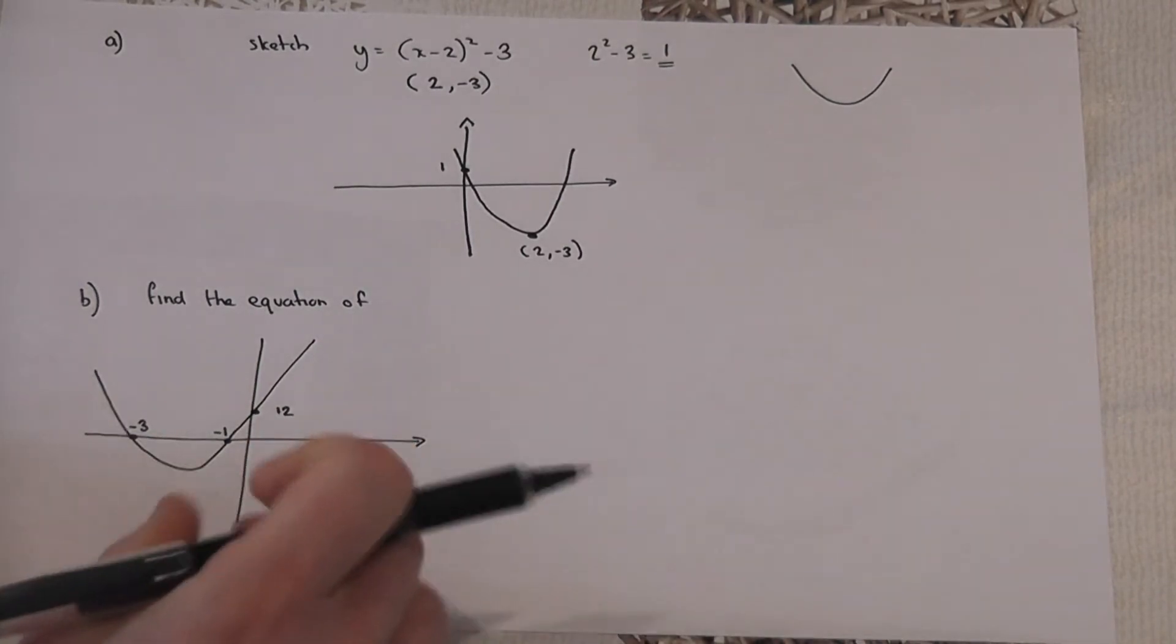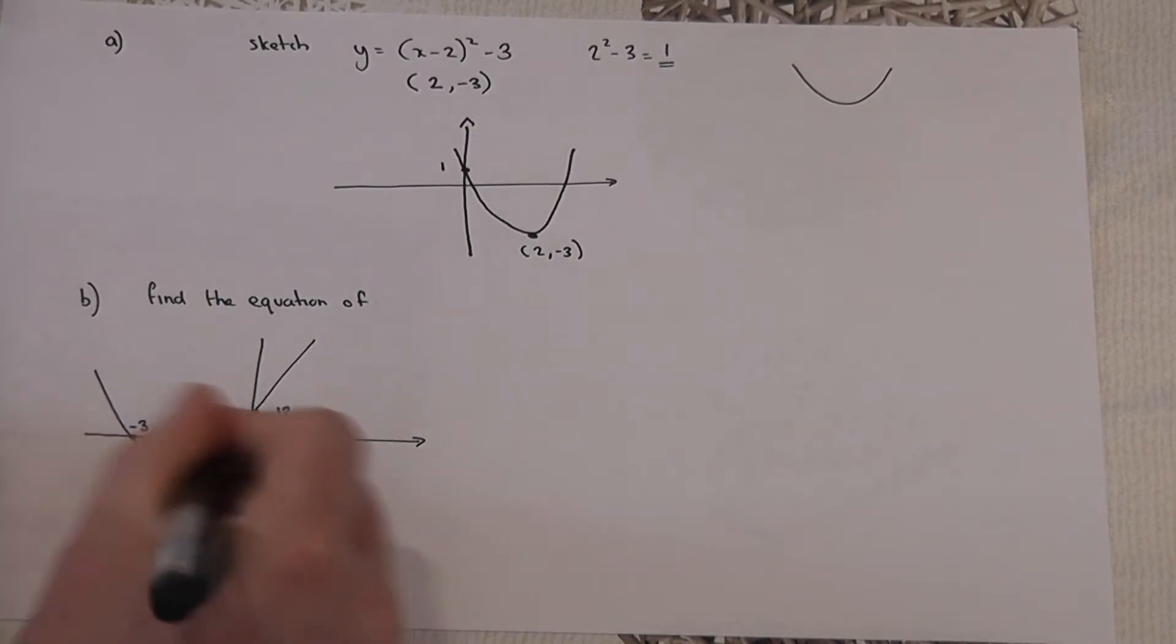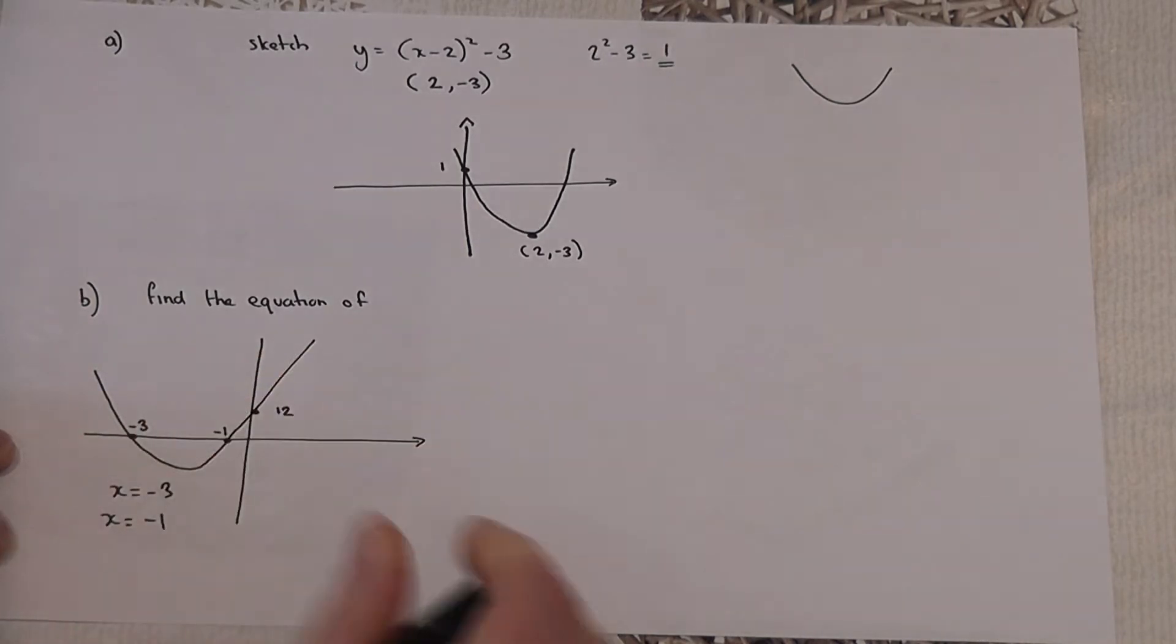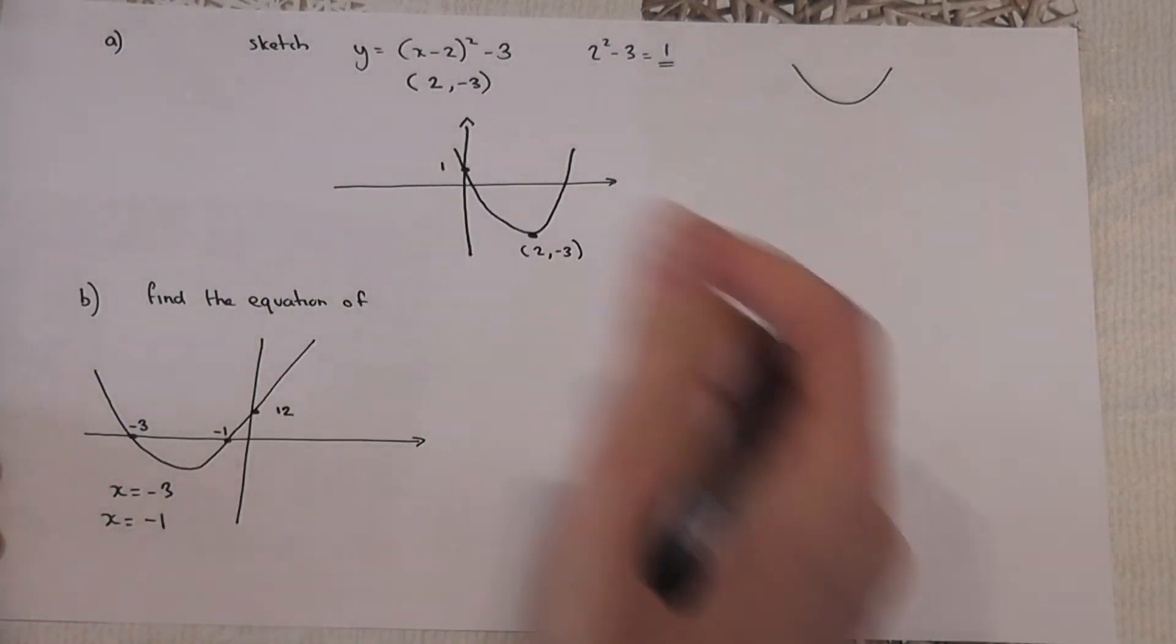Now there's a big rule here, which is that if you know the solutions or the roots—x in this case is -3 and x equals -1—then I actually know what the equation is.